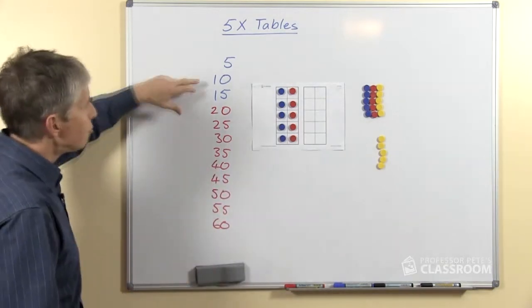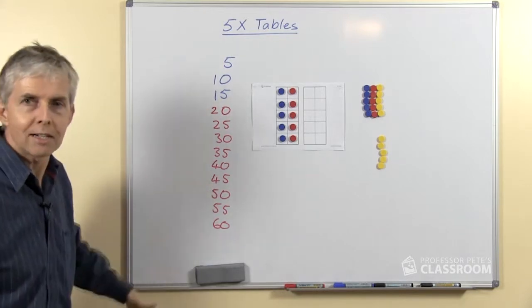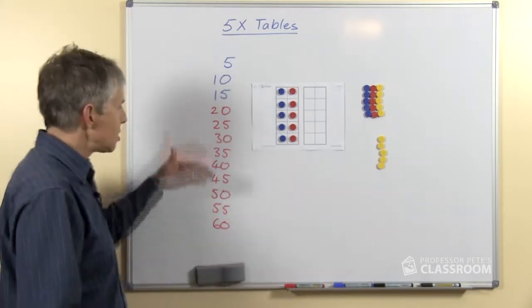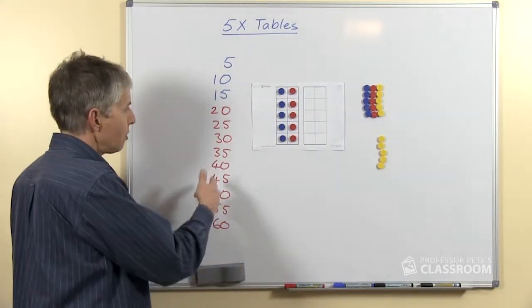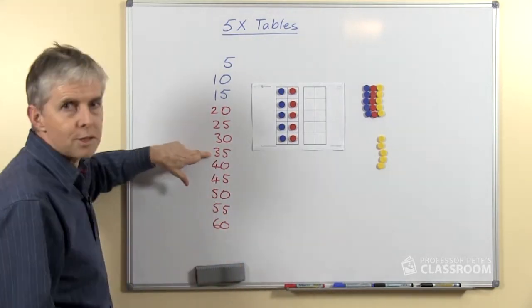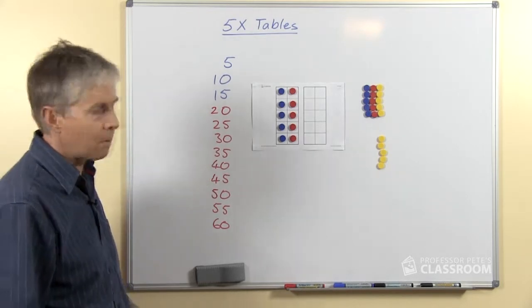And so we have these round numbers, 10, 20, 30, 40, 50 and so on. Every second answer in the Five Times Table is one of those round numbers and the next number after that has a 5 on the end. So after 30 we have 35 and then 40 and then the next one is 45 and so on.